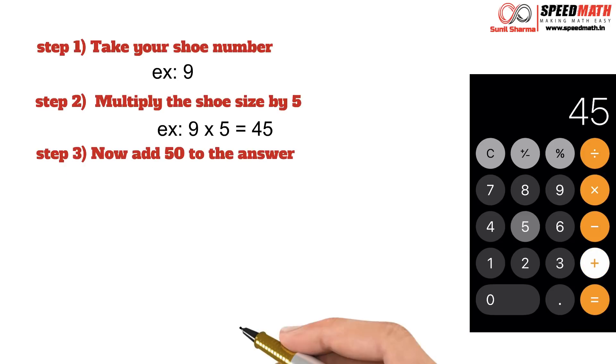Step 3: now add 50 to your answer in the calculator. So whatever is the answer, just add 50. In my example it is 45 plus 50 which will give me 95.